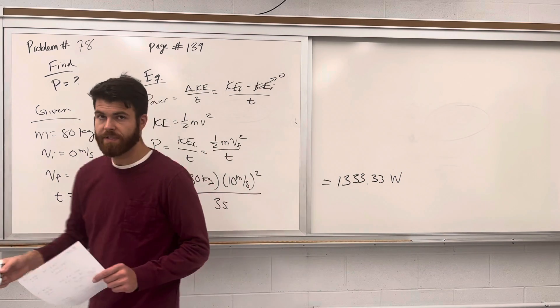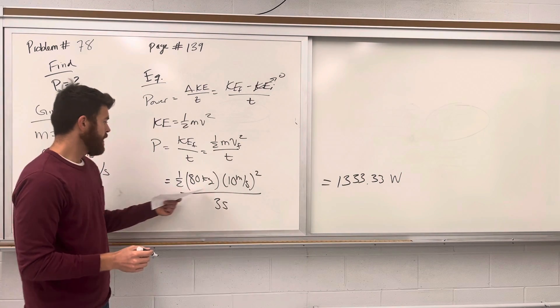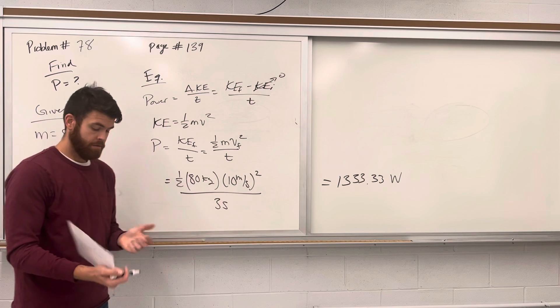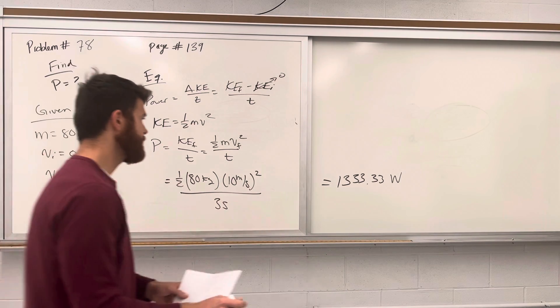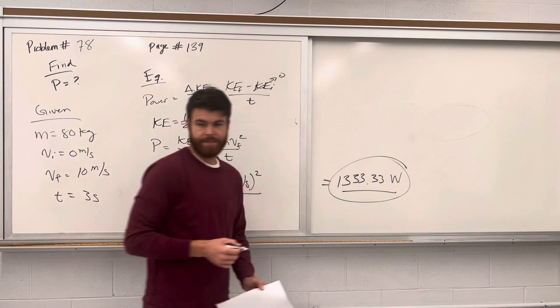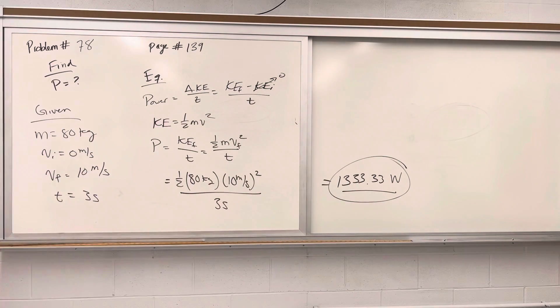So remember the units of power are watts, which is joules per second. So 1,333.33 watts is the average power generated.